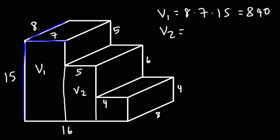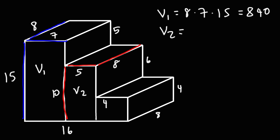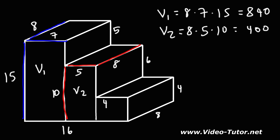Now let's focus on V2. V2 also has a length of 8 and a width of 5. The height is going to be the sum of two parts: 4 plus 6, which is 10. So we have a length of 8, a width of 5, and a height of 10. 8 times 5 is 40, 40 times 10 is 400. Now for the last one, V3, we have a length of 8, a width of 4, and a height of 4. So it's 8 times 4 times 4, that's going to be 128.